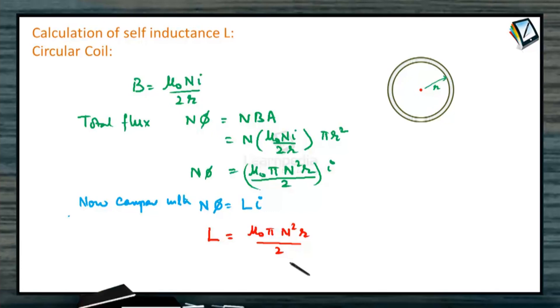This method we can adopt to calculate the self induction of various shapes. Now we have taken for a circular coil. It is μ₀πN²R by 2.